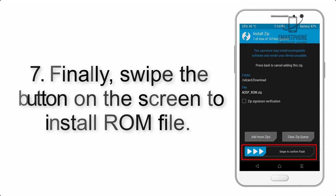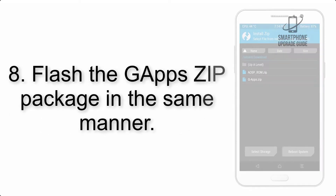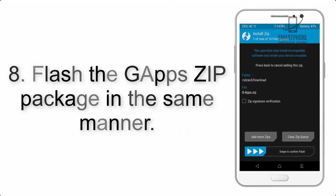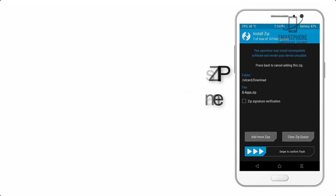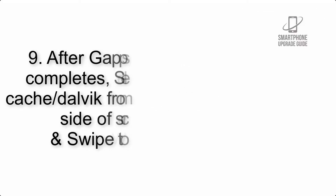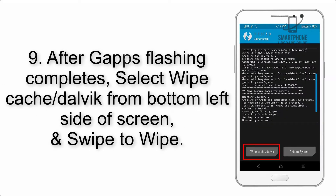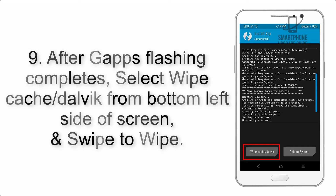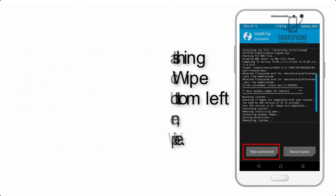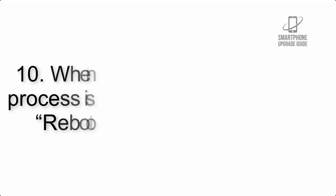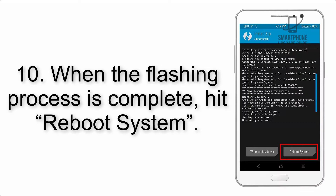Step 8: Flash the GApps zip package in the same manner. Step 9: After GApps flashing completes, select Wipe Cache and Dalvik from the bottom left side of the screen and swipe to wipe. Step 10: When the flashing process is complete, hit Reboot System.